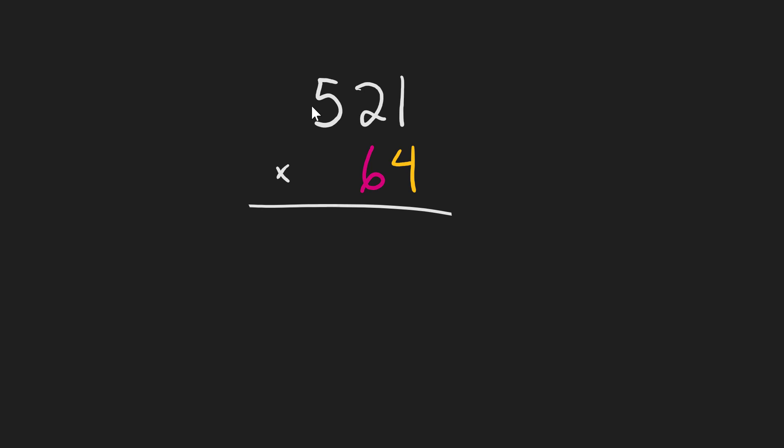Let's start solving this problem with 521 times 4. So 1 times 4 is 4, and 2 times 4 is 8, and 5 times 4 is 20. So 521 times 4 is 2,084.